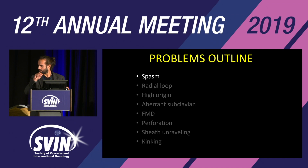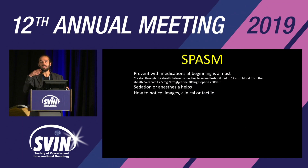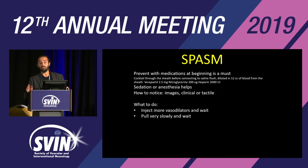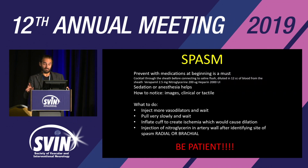Spasm. We saw some cases of spasm already. Let me show you the worst cases we had. The important thing is obviously prevention with medications. Sedation or anesthesia obviously help. How do we notice when there's spasm? Three ways: images, if we see it; clinical, the patient may have severe pain during the case; or tactile, we may feel that the catheter doesn't go forward. What to do? Inject more vasodilator, pull very slowly and wait. We can also inflate the cuff to create ischemia that causes dilation, or inject nitroglycerin transcutaneously. Be patient — don't pull hard, because that's where issues can come.